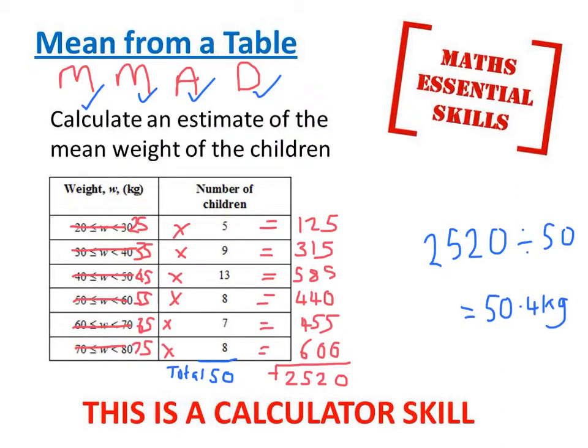The weights of the children varied from 20 to 80, so an average, a mean of 50.4 is very sensible. If I divided by 6, I'd have got a very big average which wouldn't have been sensible, and that would be the cue point that something had gone wrong.